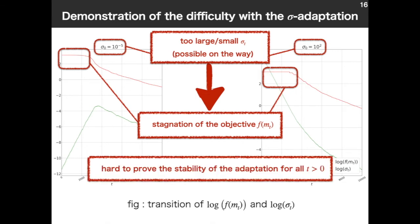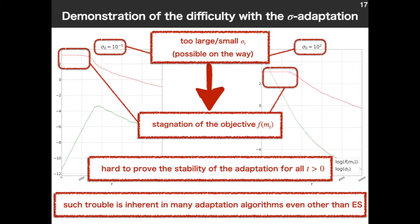The trouble is it's hard to prove the stability of the adaptation. There is always some probability that the σ unfortunately goes too large or too small, and the objective function is stuck and can't escape from that point. And additionally, such trouble is also inherent in many adaptation algorithms which has unbounded parameters. So, the (1+1)-ES is rather simple algorithm as we see before, but we consider it's significant to analyze because development of such kind of unbounded heuristic adaptation mechanism is still not enough.